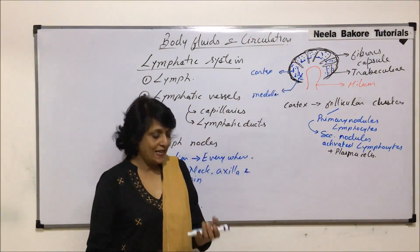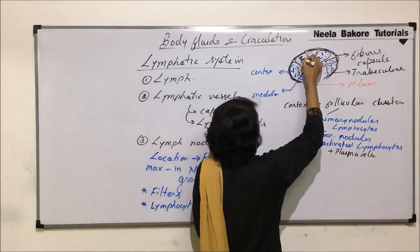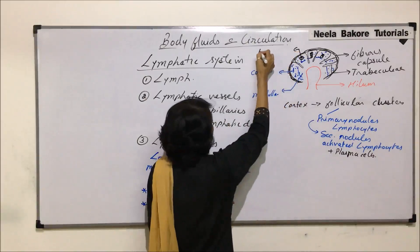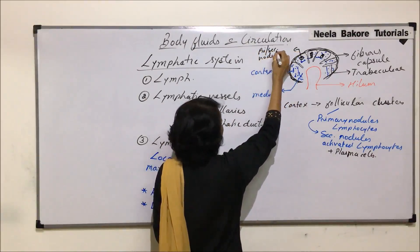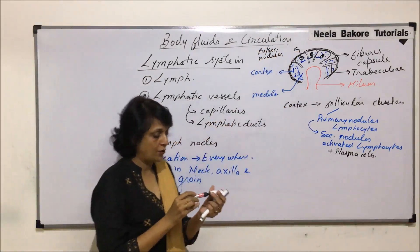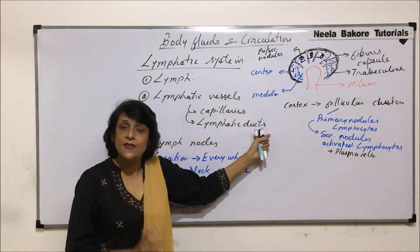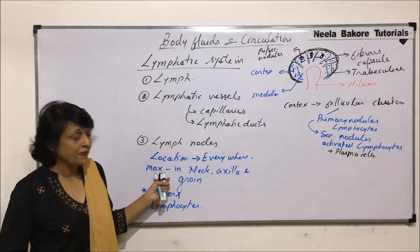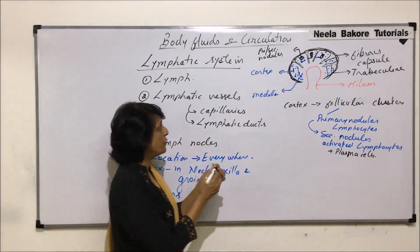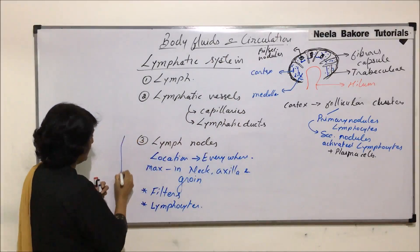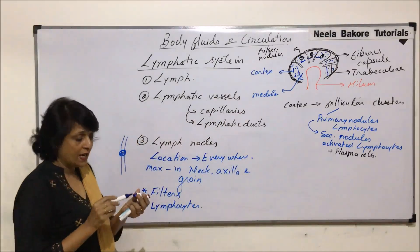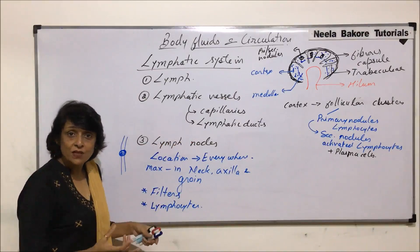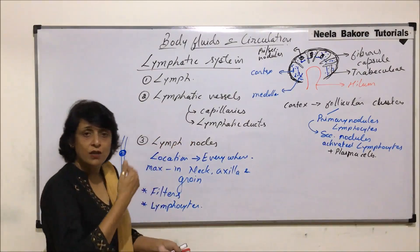So in the cortex we may find these kinds of clusters — primary or secondary nodules, that is the follicular clusters. This is what is normally found in a lymph node. When a lymphatic vessel is in its path and we have a lymph node, that lymph node is producing lymphocytes and plasma cells so they can enter the circulation.